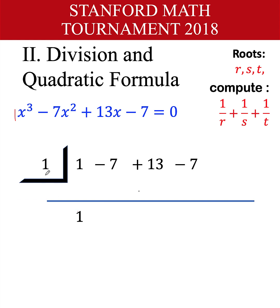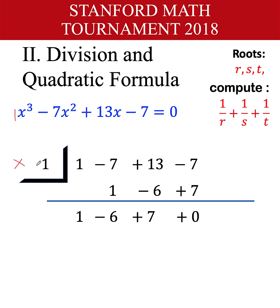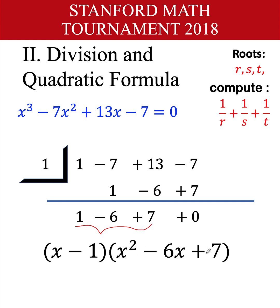Using synthetic division with 1: bring down 1. 1 times 1 is 1; add negative 7 plus 1 equals negative 6. Negative 6 times 1 is negative 6; add positive 13 plus negative 6 equals 7. 7 times 1 is 7; add negative 7 plus 7 equals 0. The remainder is 0, so x equals 1 is a root. The depressed polynomial is x squared minus 6x plus 7, giving the factored form x minus 1 times x squared minus 6x plus 7 equals 0.